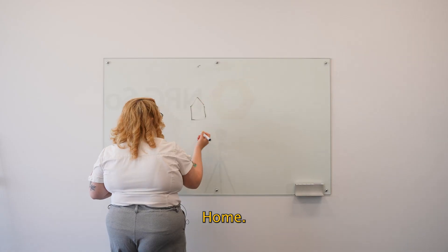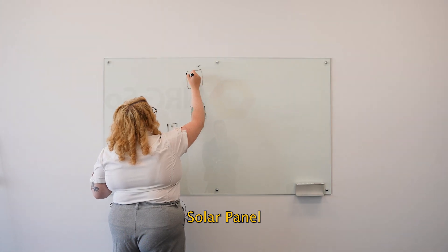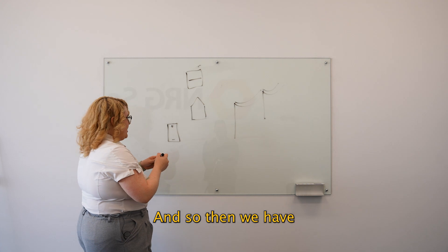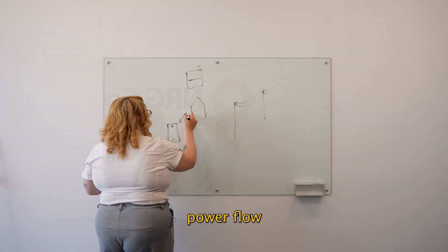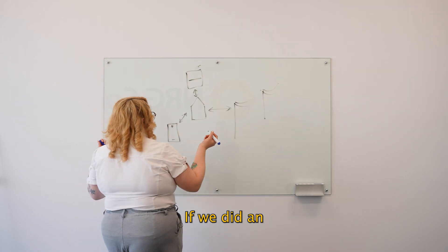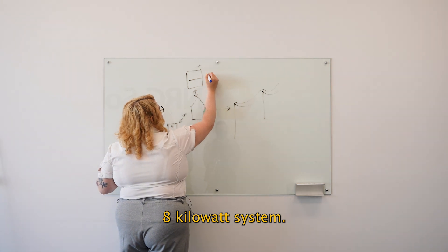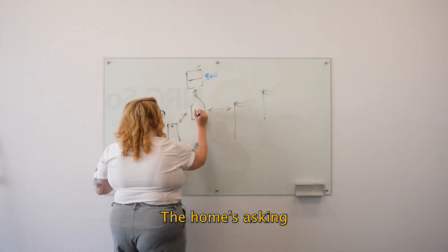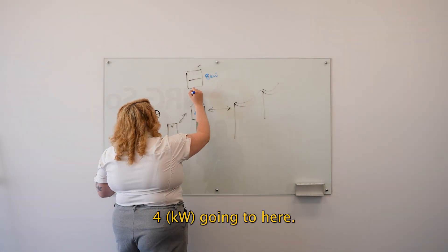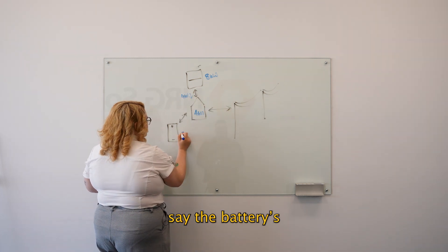You'd go home, battery, solar panel, grid — and so we have power flow between them. We did an 8 kilowatt system; the home's asking for 4, so we've got 4 going to the battery.